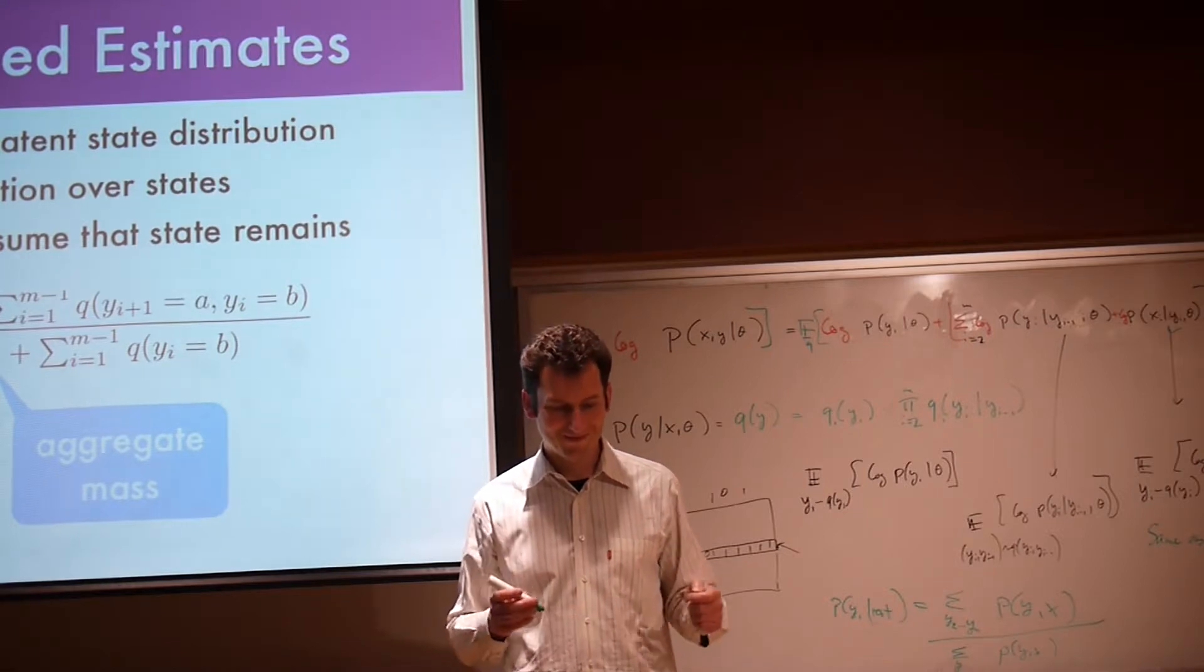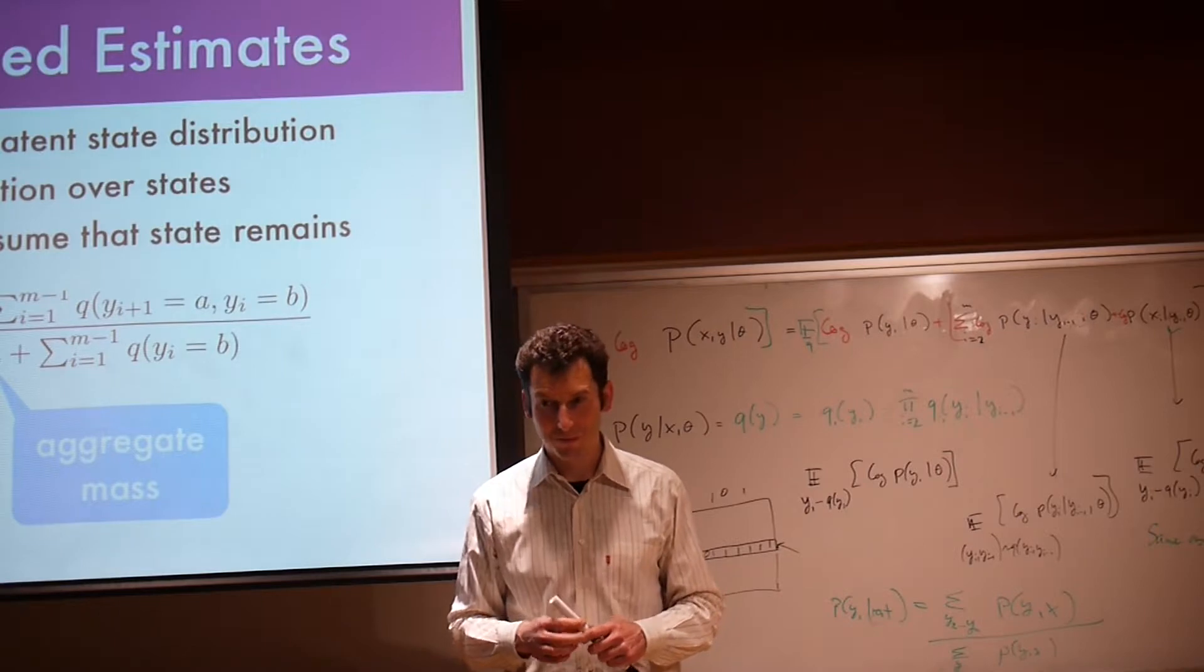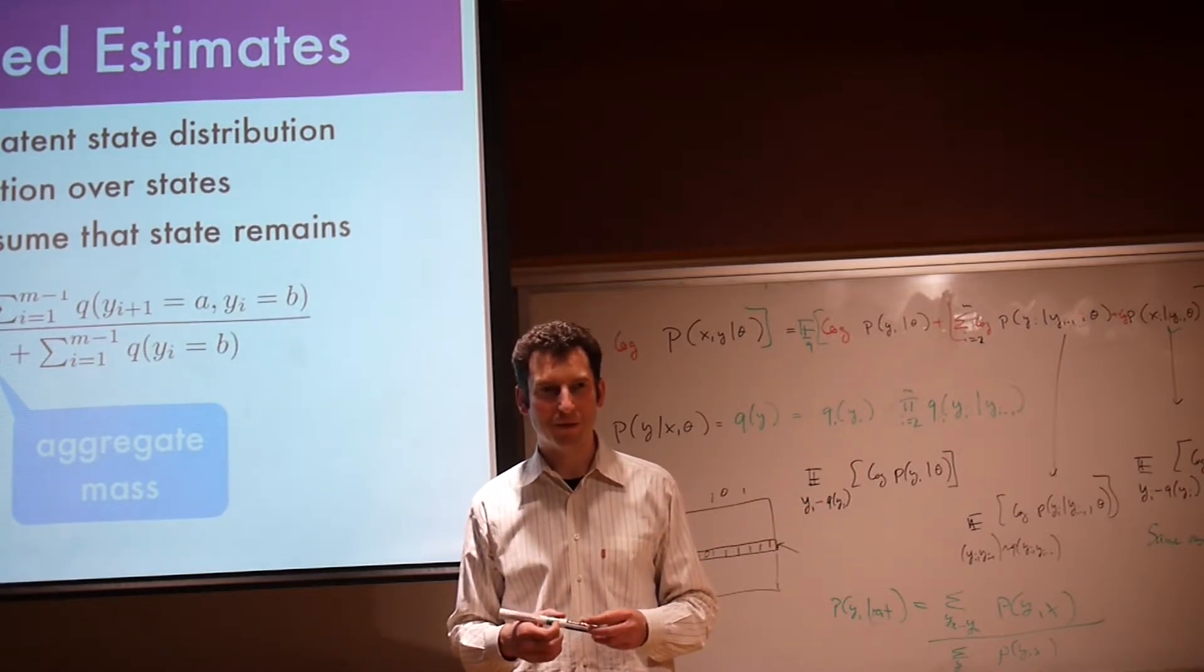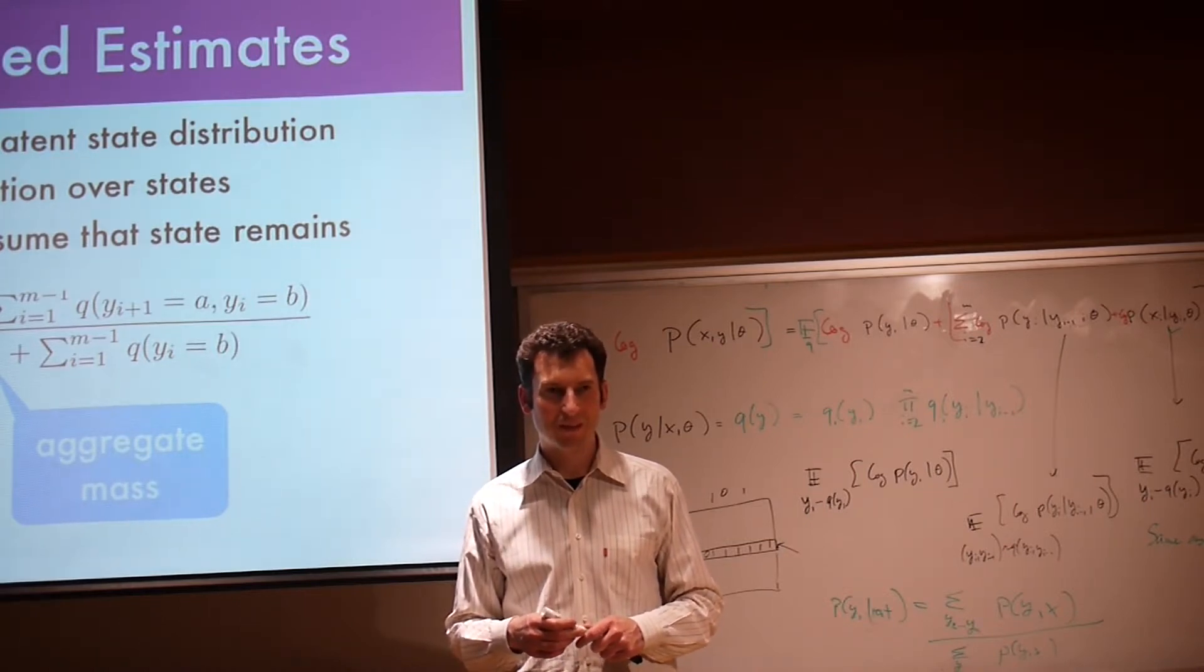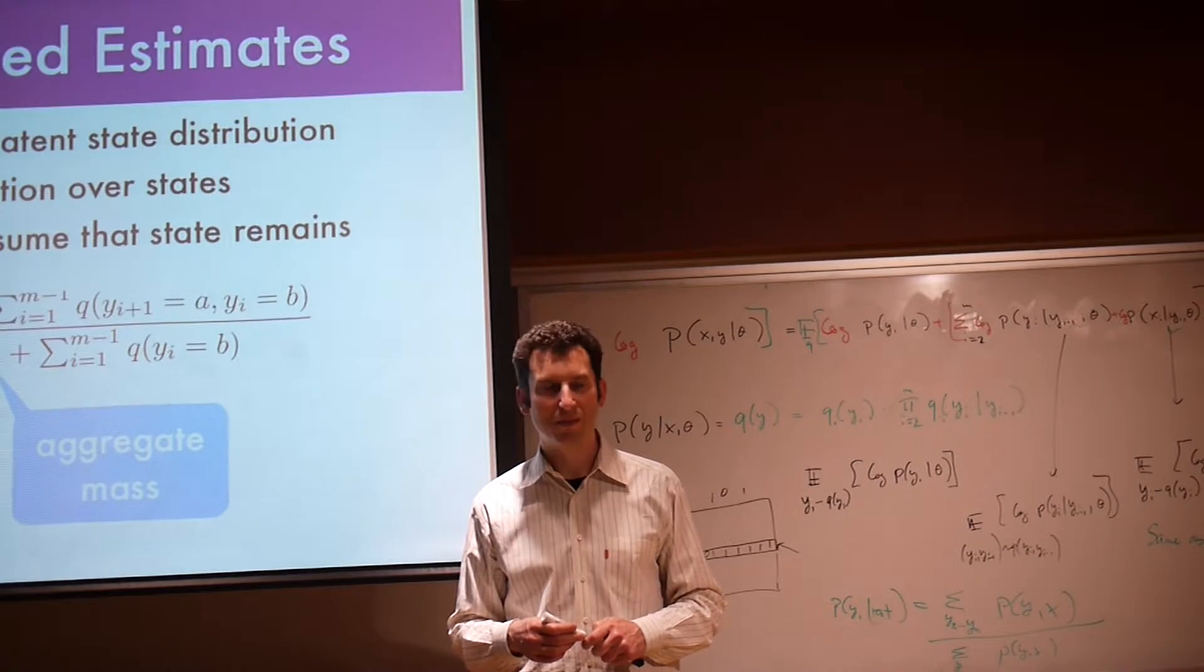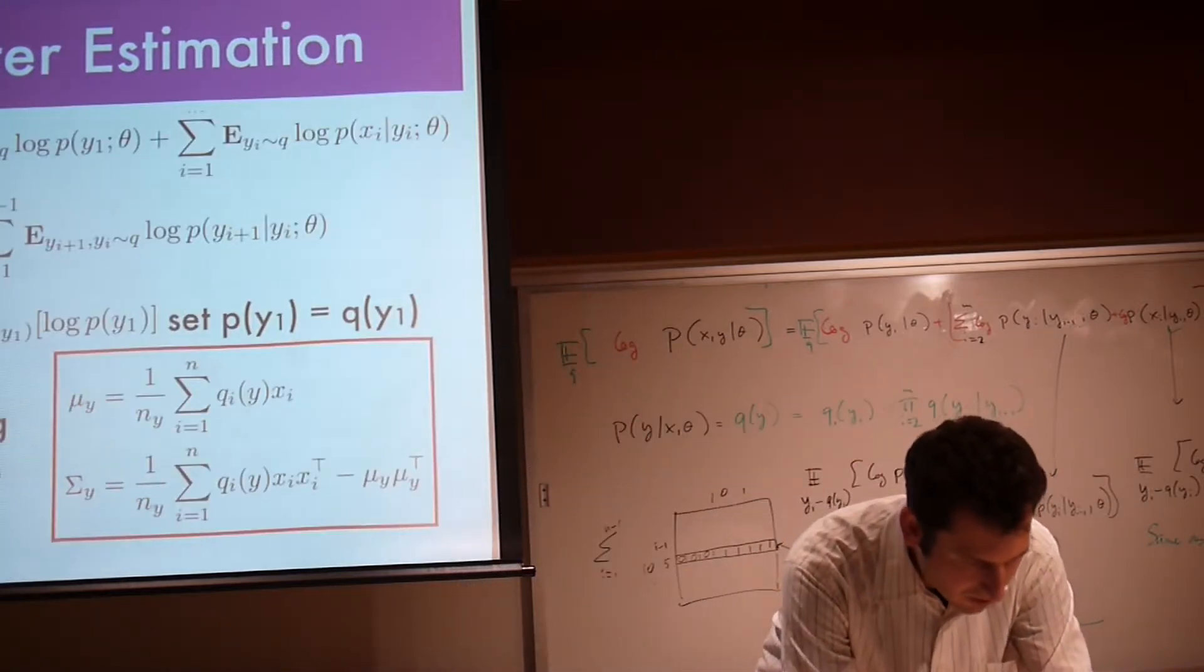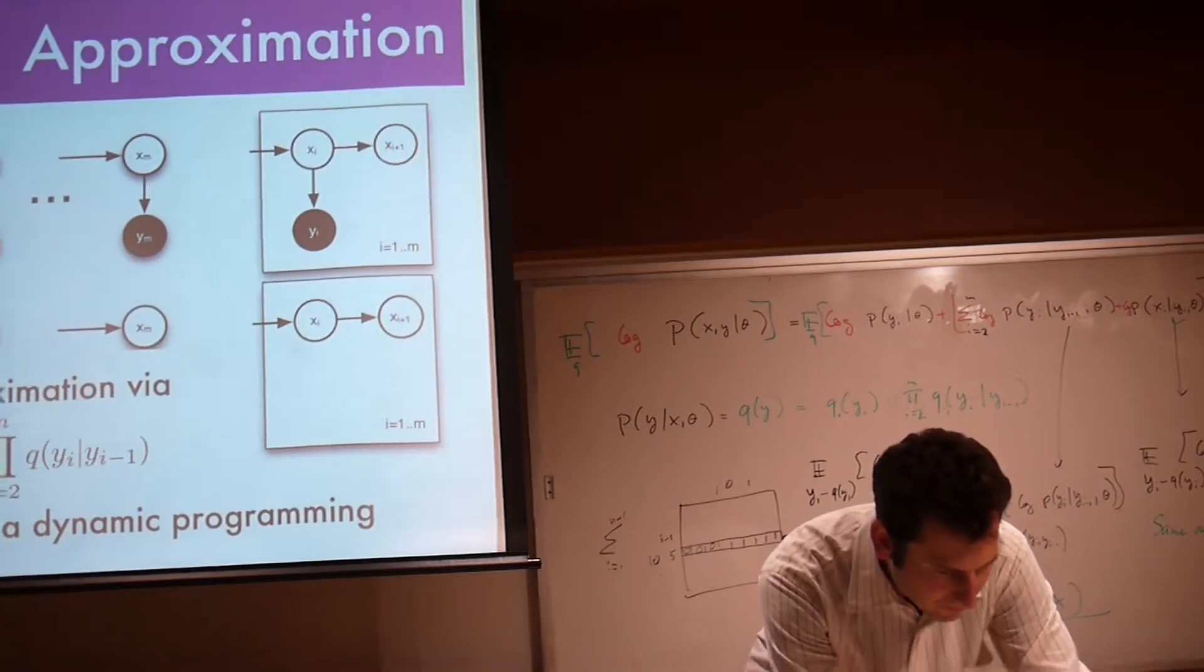Typically you're not going to have this expression. You're going to have something like p of y and x. Then you need to divide by the same sum, but now you sum over all the y's of p of y given x. There's really nothing that we didn't already do. Should I redo the dynamic programming reasoning again? Or should we move on?